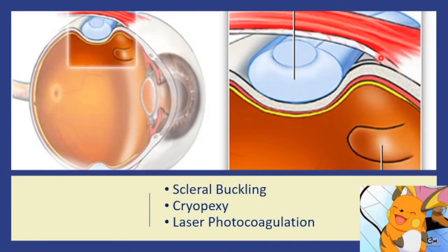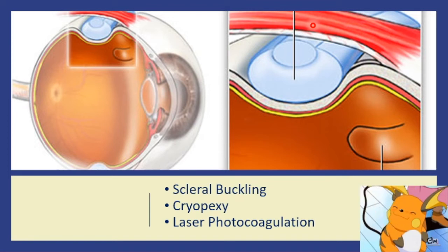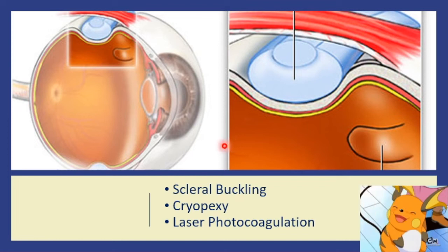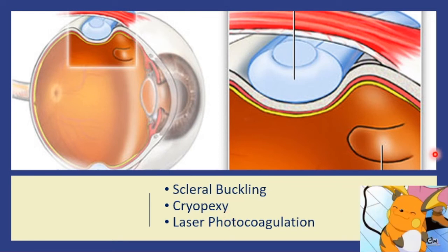In scleral buckling, the scleral buckle is placed against the outer surface of the eye and sutured to keep it in place. The purpose of the buckle is to push the sclera towards the middle of the eye to relieve the pull on the retina and allow the tear to settle against the wall of the eye. Cryopexy using extreme cold, or laser photocoagulation, scars the area around the tear to hold it in place until a seal forms between the retina and the layer beneath it.